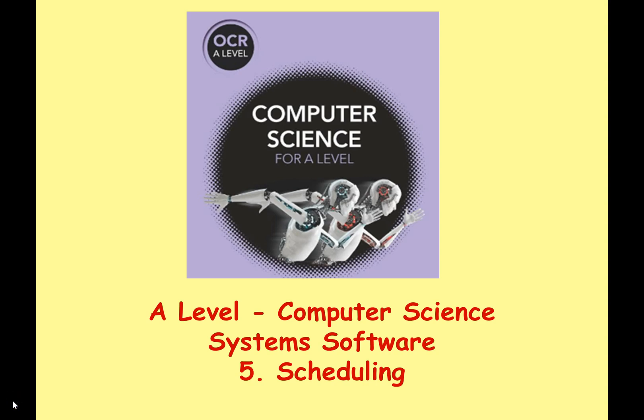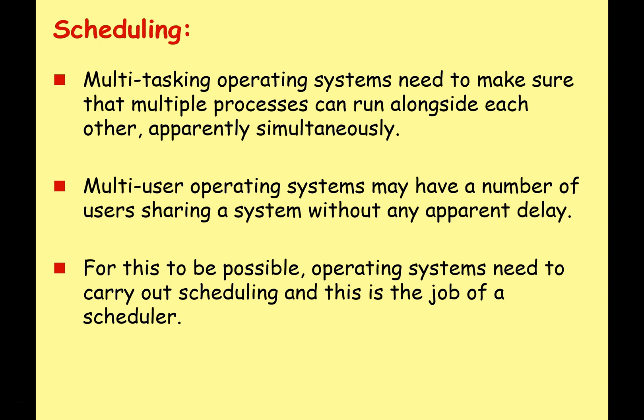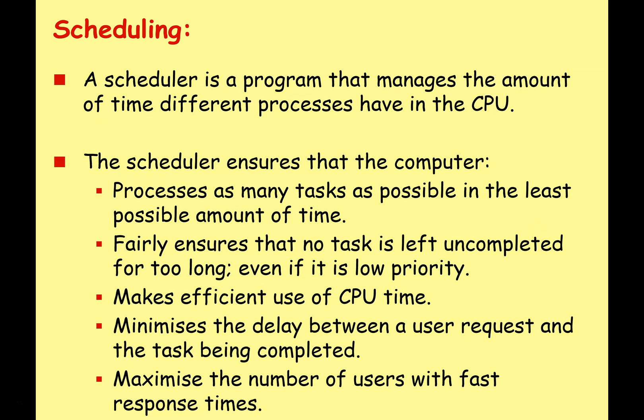Hello and welcome to the latest video in my series on A-level systems software. Today we're going to look at scheduling. Multitasking operating systems need to make sure that multiple processes can run alongside each other apparently simultaneously, and multi-user operating systems may have a number of users sharing a system without any apparent delay. For both of these to be possible, operating systems need to carry out scheduling, and this is the job of the scheduler.